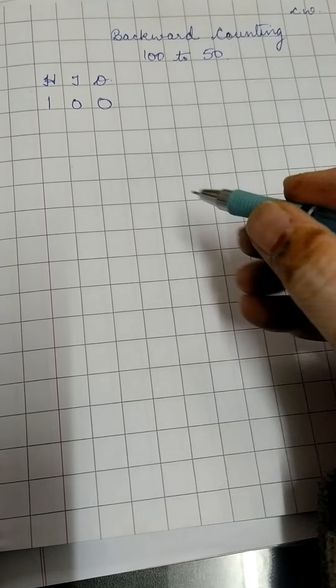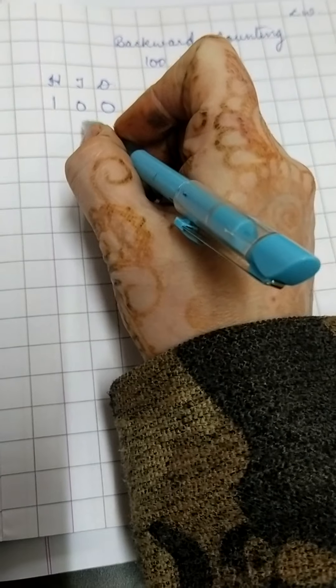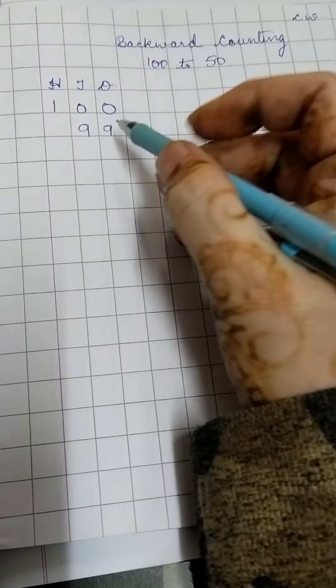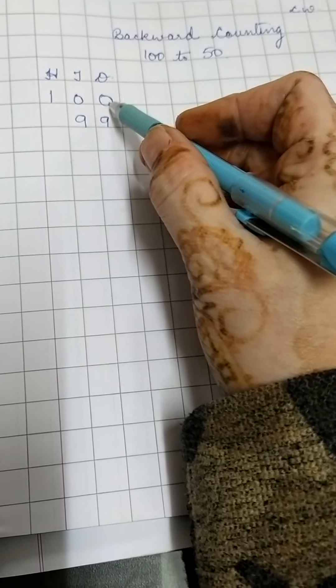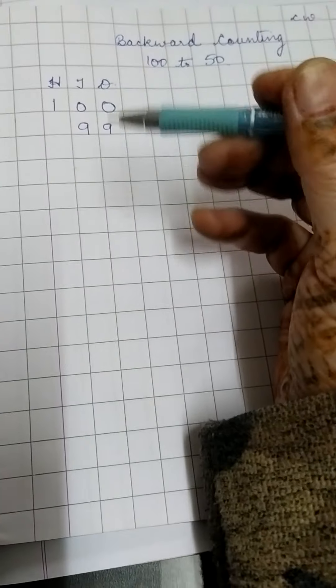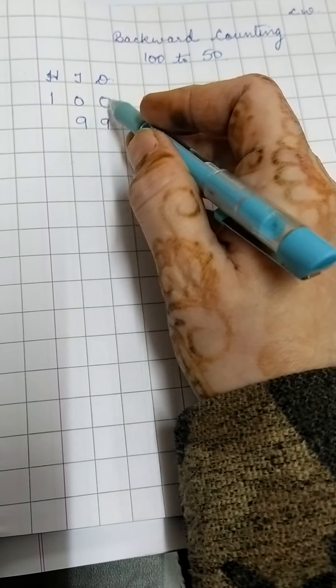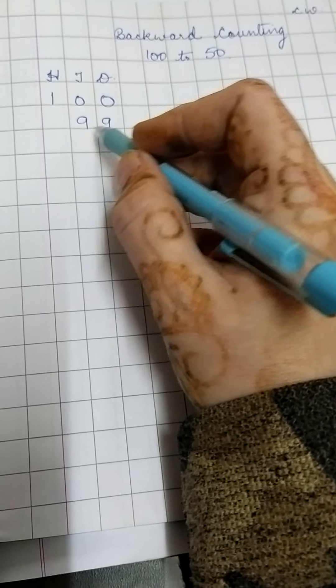Minus 1. So before 100, what comes before 100? 99. I have also told you beforehand that whenever there are zeros, the previous number will have nines. So in place of both the zeros, two nines will come.